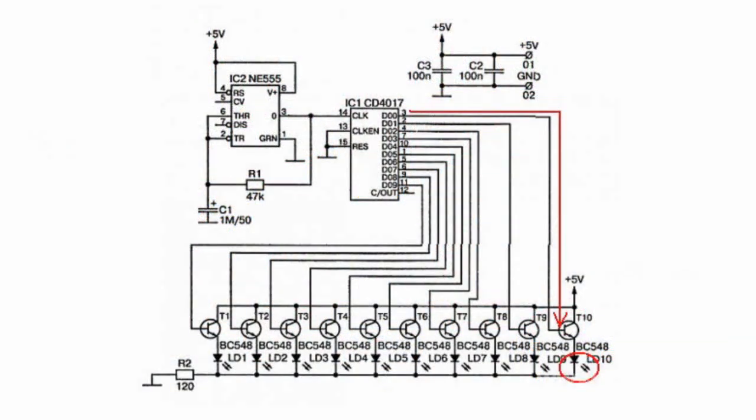From the output, voltage is fed to the transistor base and opens it. As a result, through an open transistor collector-emitter, another LED becomes connected to the positive of the power supply, causing it to glow.